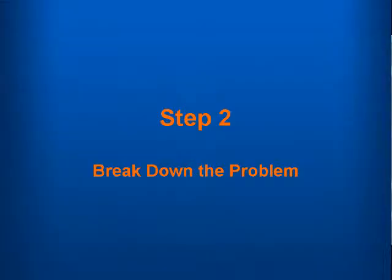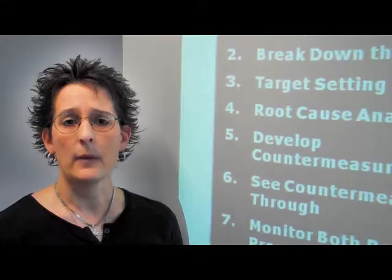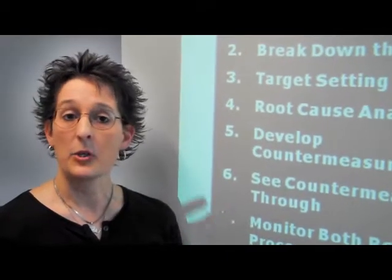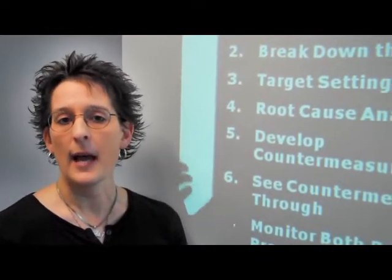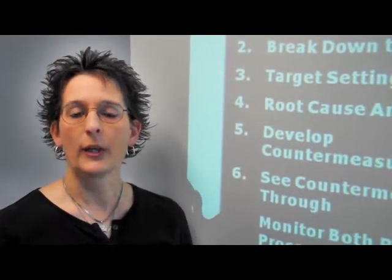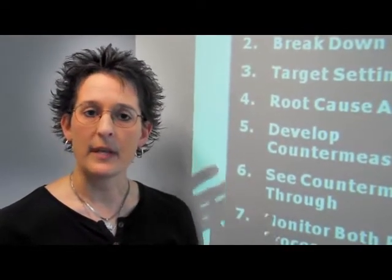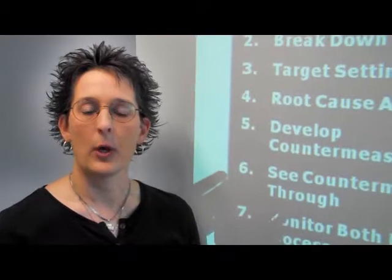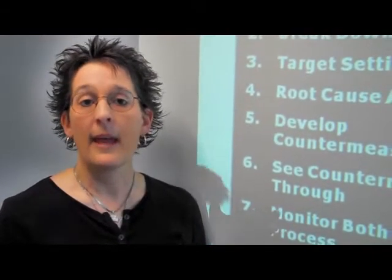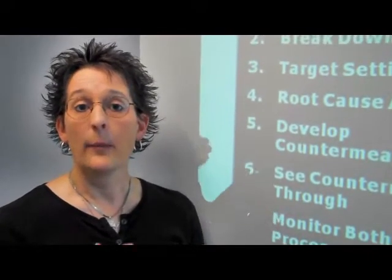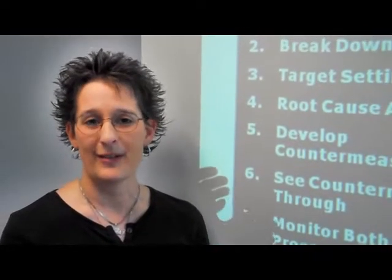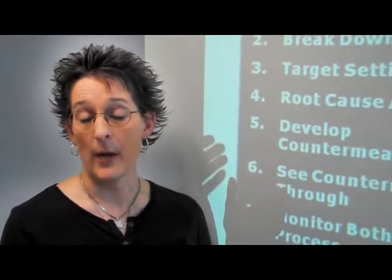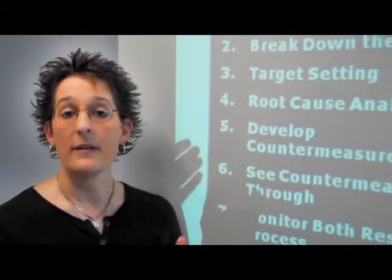Step two is break down the problem. It allows us to make the problem more manageable — it gets it into smaller pieces. We need to find a prioritized problem, which then allows us to go look at the process. We go to the GIMBA, see the actual work, and ask the workers what is truly happening at the process, in order to look at the point of occurrence. The point of occurrence is what's going wrong in the process — a discrepancy or a defect being made.